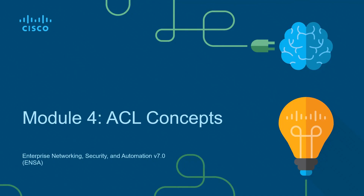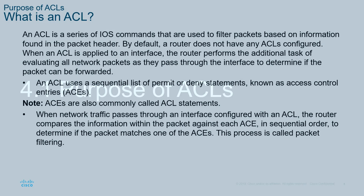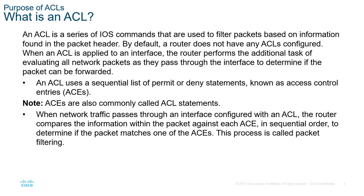Module 4 is all about ACL concepts. We're going to be looking at the purpose, wildcards, guidelines, and the different types of ACLs. An ACL is a series of commands that allow for filtering of IP packets. These are called access control entries, or ACEs. Initially the router or layer 3 device does not have an ACL applied — you actually have to apply them to the interface. The ACL is the list of ACEs, and the process is called packet filtering, which is done sequentially.